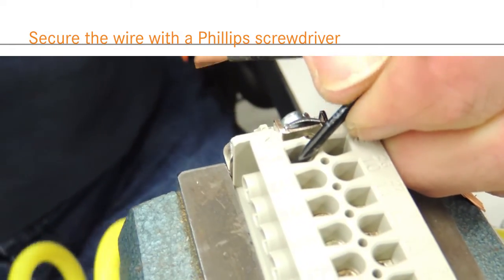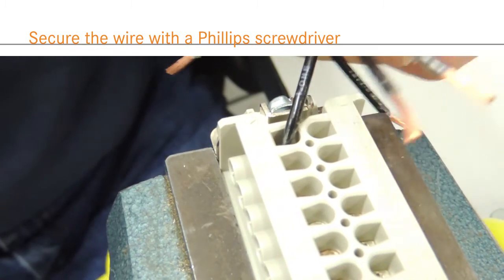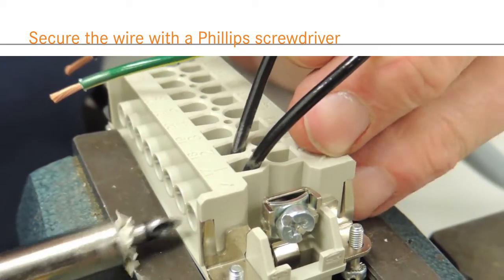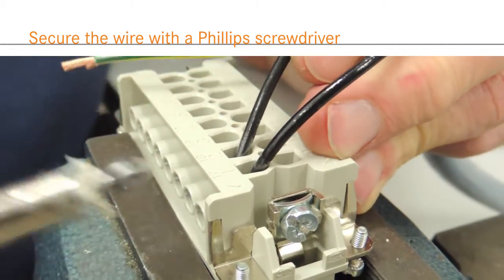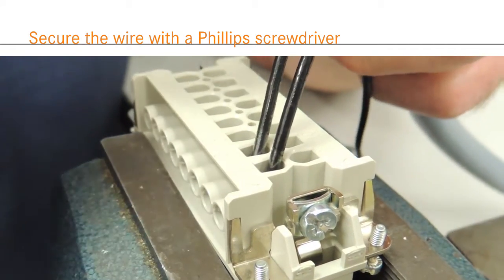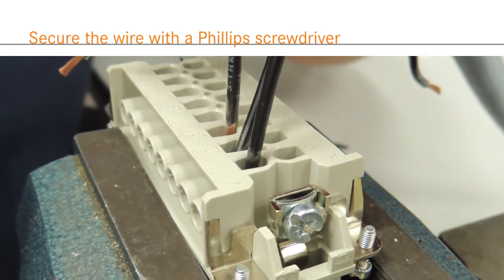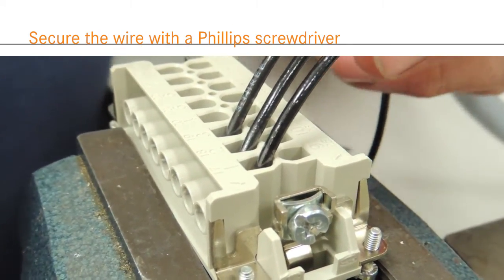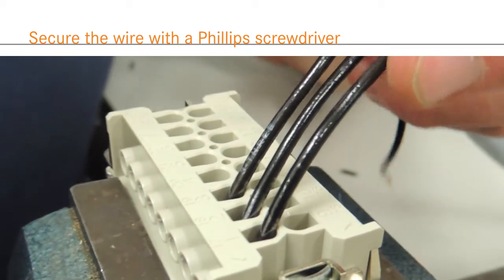To wire a screw insert, first loosen the terminal screws on the side of the insert with a standard Phillips screwdriver. Do not remove them, just enough room for the wire is all you need. Insert the stripped conductor into the terminal and tighten the screw to 2.7 inch-pounds. Be careful, over tightening the screws could lead to stripping out the thread.